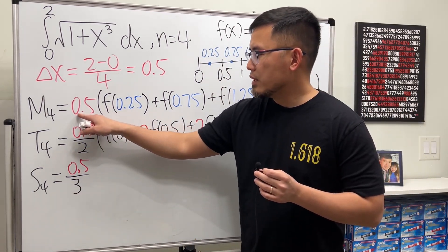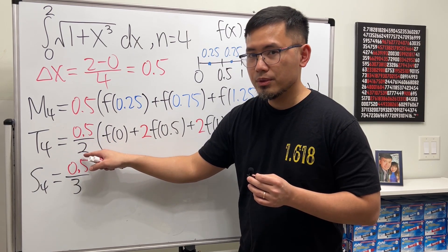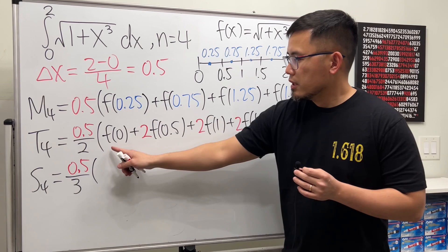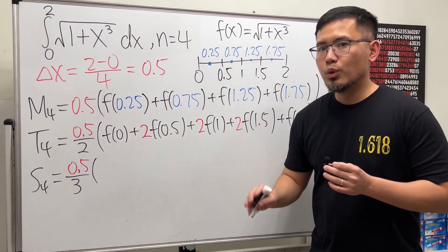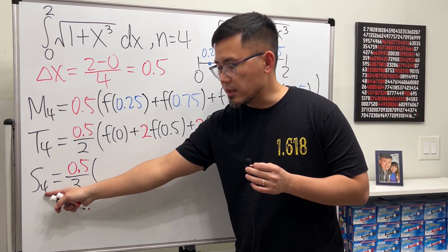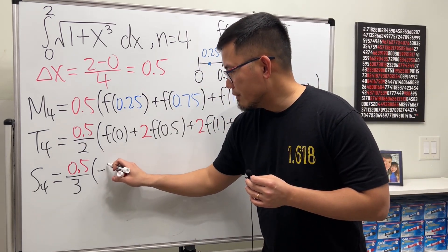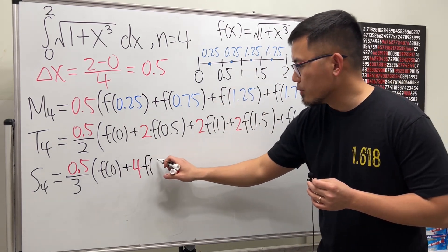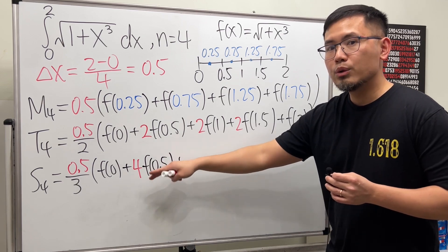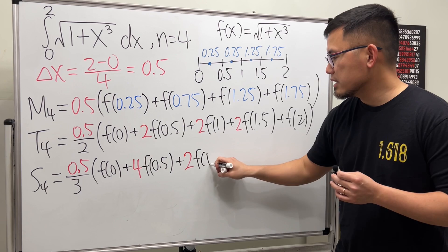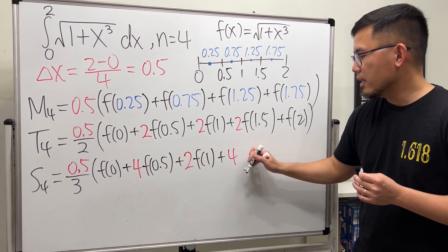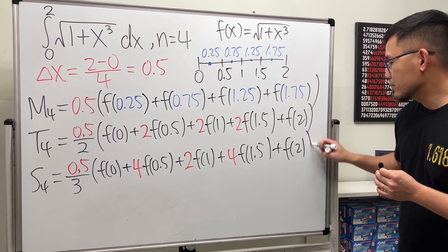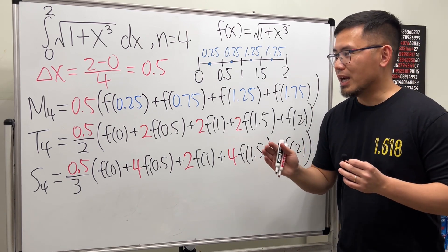Simpson's rule S4: we have delta x divided by 3 — so 0.5/3. One way to remember: trapezoidal rule uses delta x divided by 2, and Simpson's uses divided by 3. The first and last coefficients are 1, and in the middle the coefficients alternate 4, 2, 4, 2... Also, n must be even for Simpson's rule. So: 1·f(0) + 4·f(0.5) + 2·f(1) + 4·f(1.5) + 1·f(2). Done.